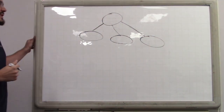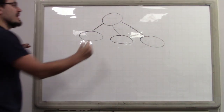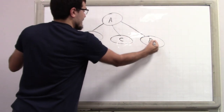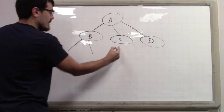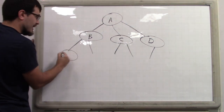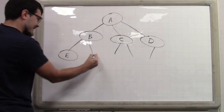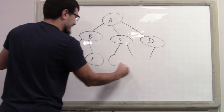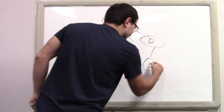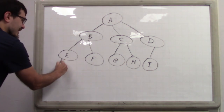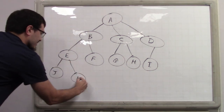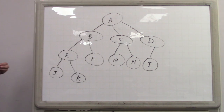Imagine there's a tree that represents a corporate hierarchy, and there are some people — we'll call them A, B, C, D for short. They're nameless because they're corporate drones and don't have any identity. So here's a corporate hierarchy.